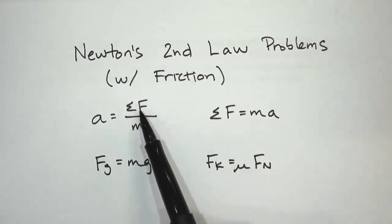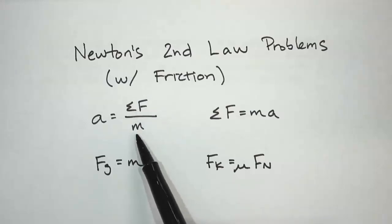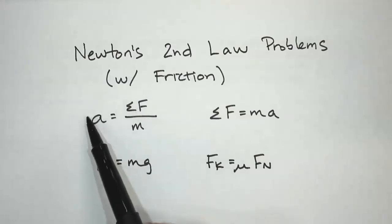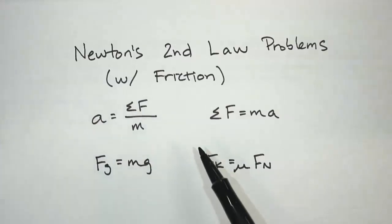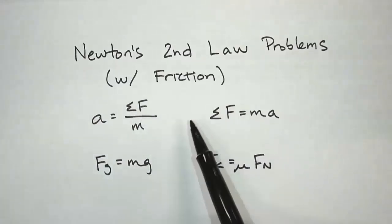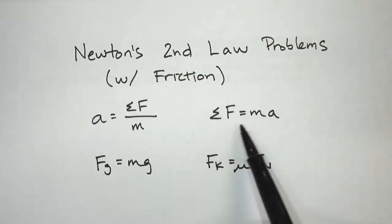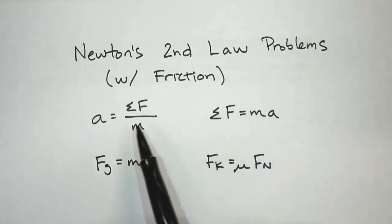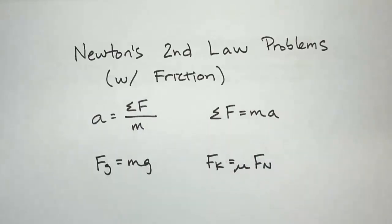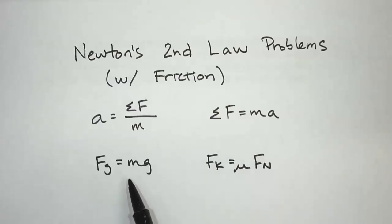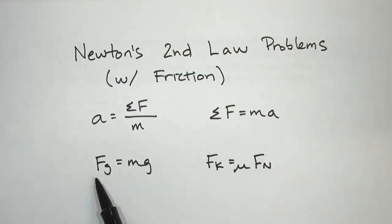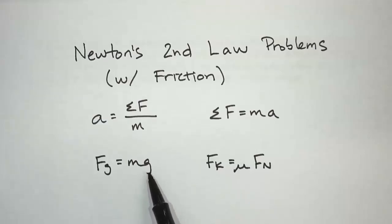The net force and mass are kind of the cause — you can change these, and if you change these, the acceleration is like the effect. Now when you solve a problem, sometimes it's easier to write it as F = ma. Mathematically, these are equivalent. You should also know how to calculate the gravitational force, also known as weight, which is mass times g, which is 9.8 newtons per kilogram.